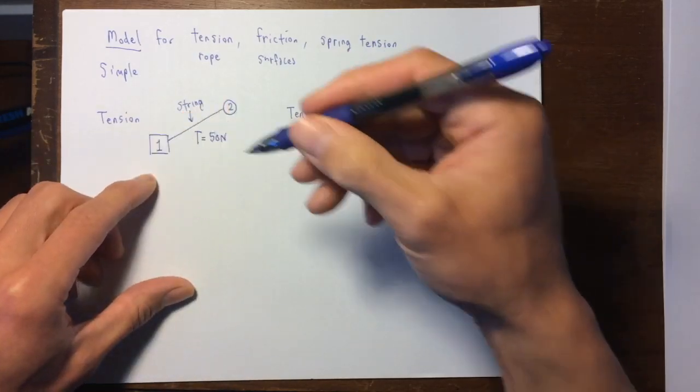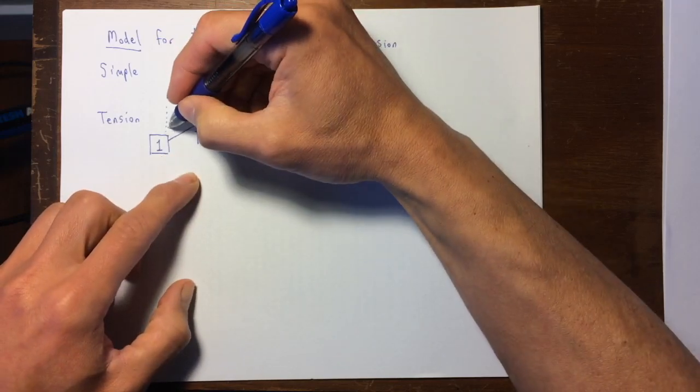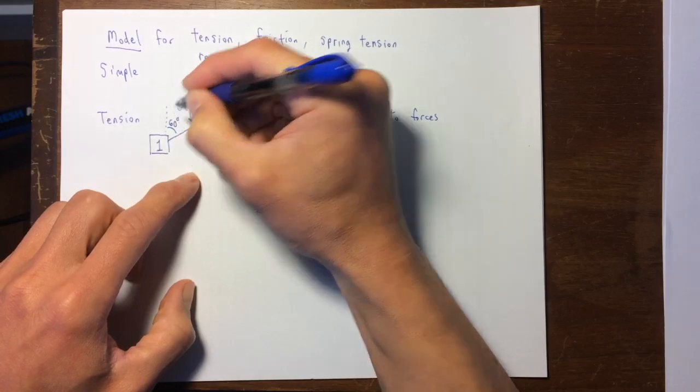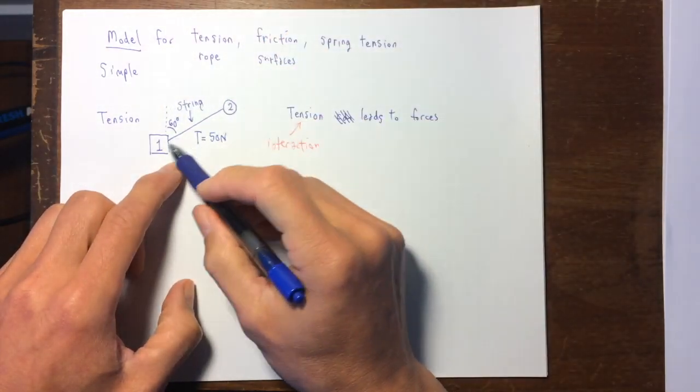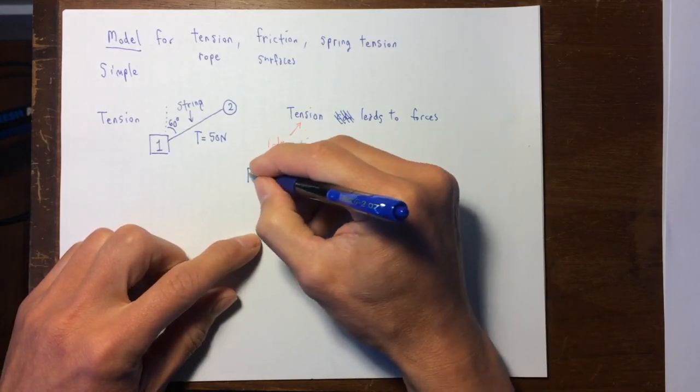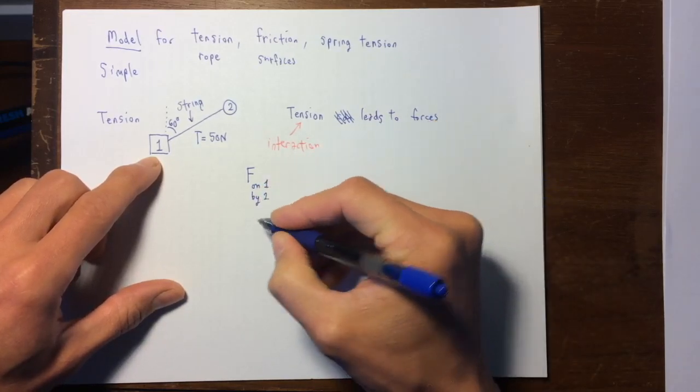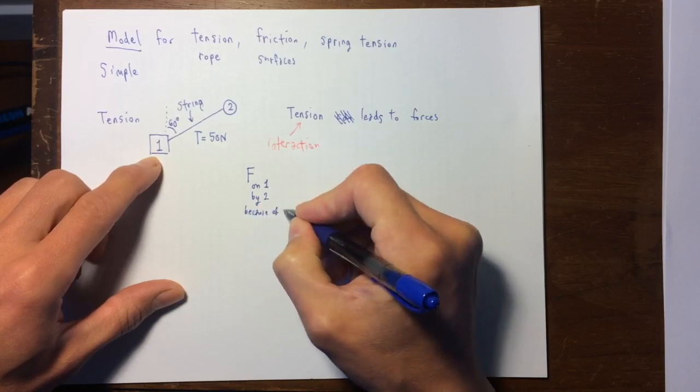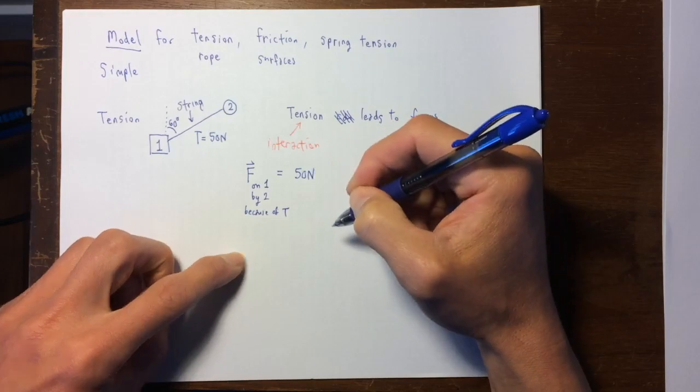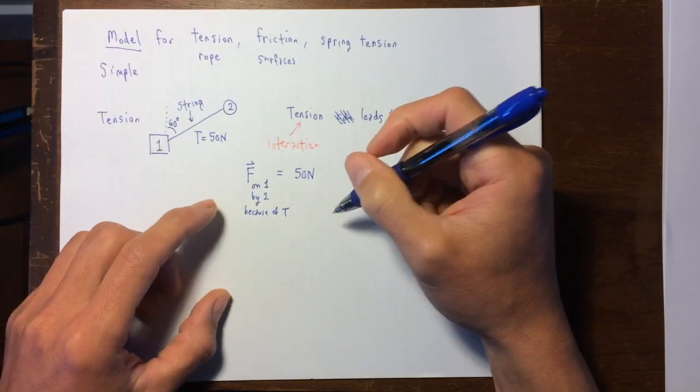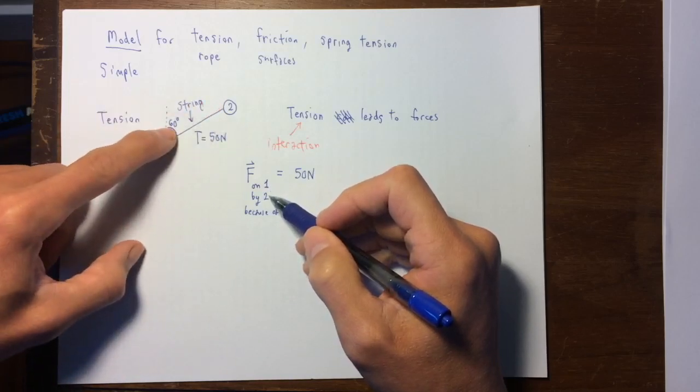And I've got these objects, one and two, and for the purposes of argument, let's say that this string, that is the material of the string, is at 60 degrees over to the right from vertical. So here's the vertical, and 60 degrees towards the right is the direction of the string. And so we can say that there is a force on object number one by object number two because of the tension T, and this is a vector, and it's got a magnitude of 50 Newtons. I'm just modeling, this is how you model string tension forces, it's 50 Newtons, and acting on number one, it's up towards the right at that angle from vertical.